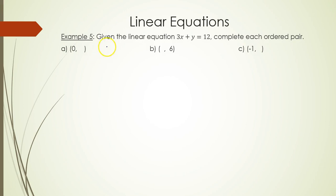Now we use the equation 3x + y = 12 to complete each ordered pair. So when x is 0, what is y? Well, 3 times 0 + y = 12.